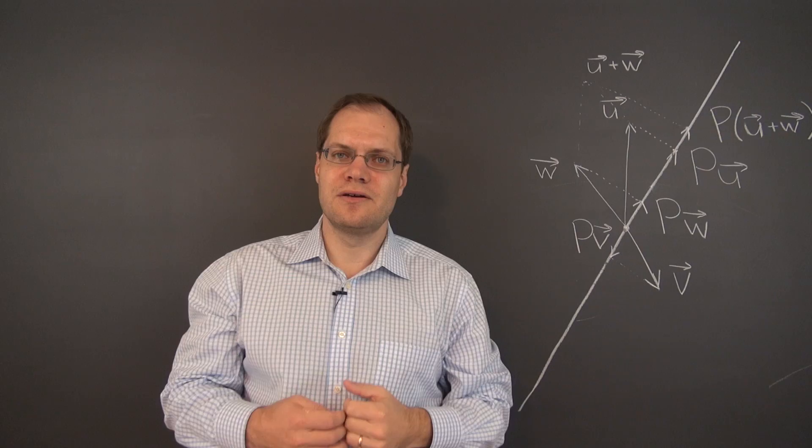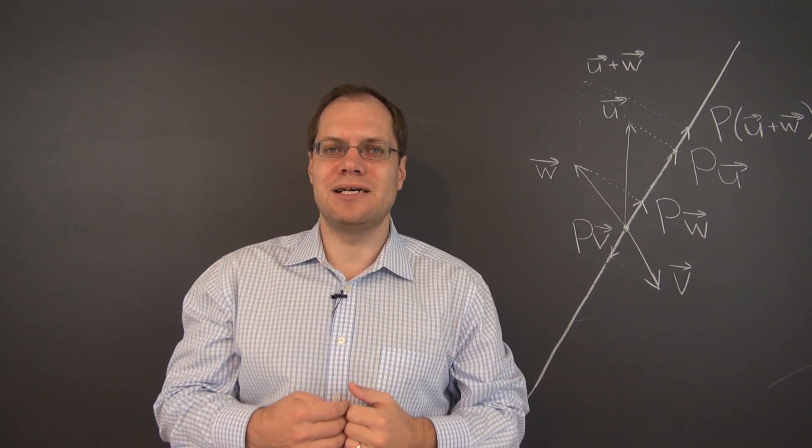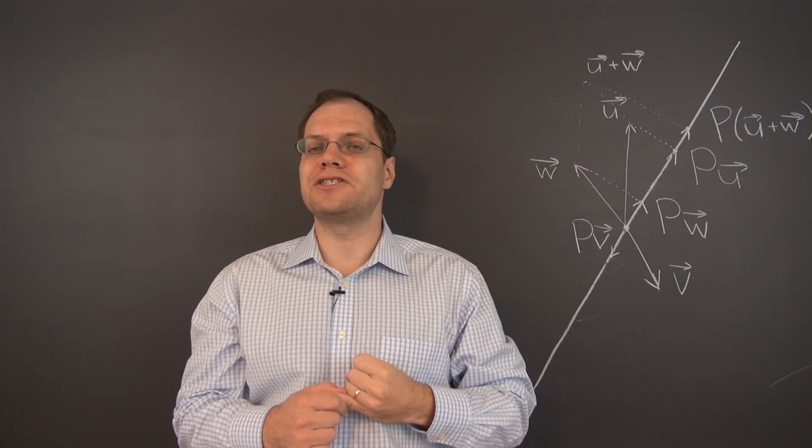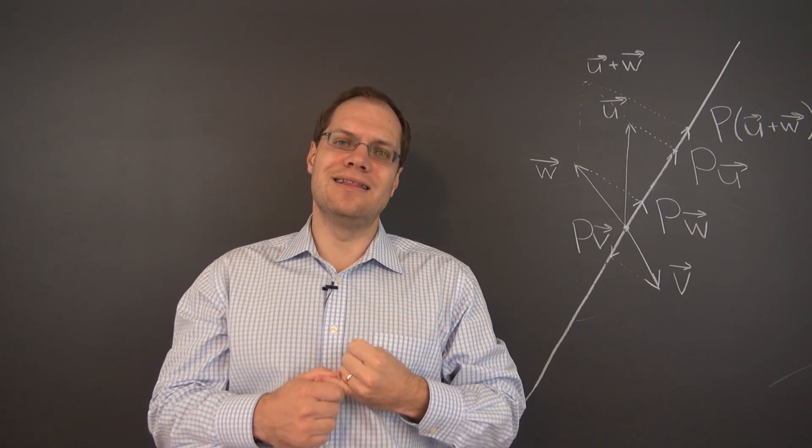Which tells us that p of u plus p of w actually equals p of u plus w. So it passes the sum test. You can test multiplication by scalar on your own. It will pass that test as well. So projection is indeed a linear transformation.